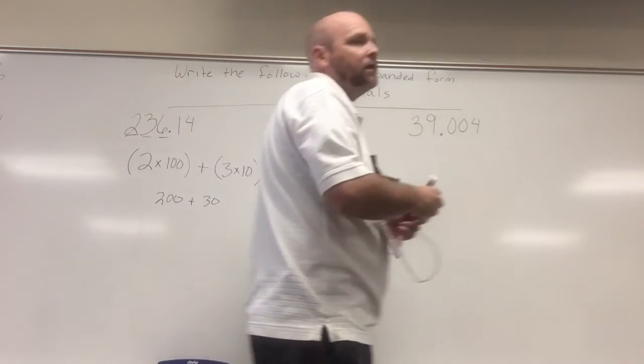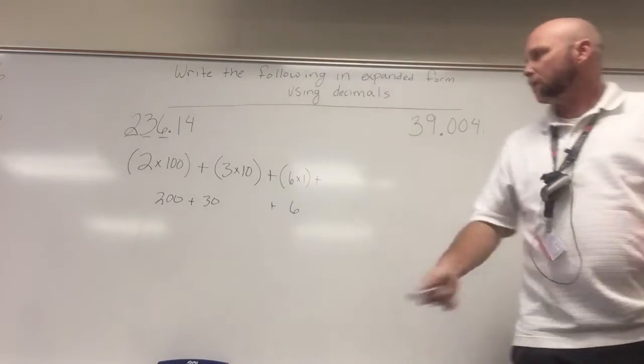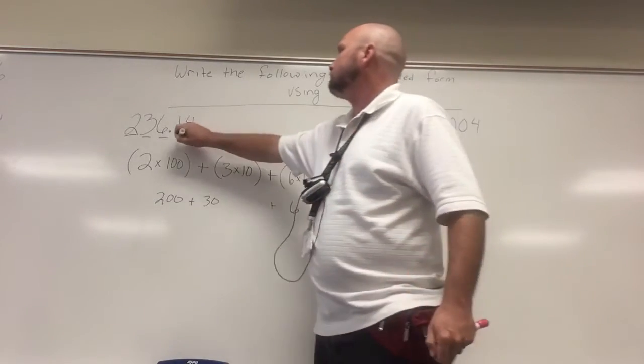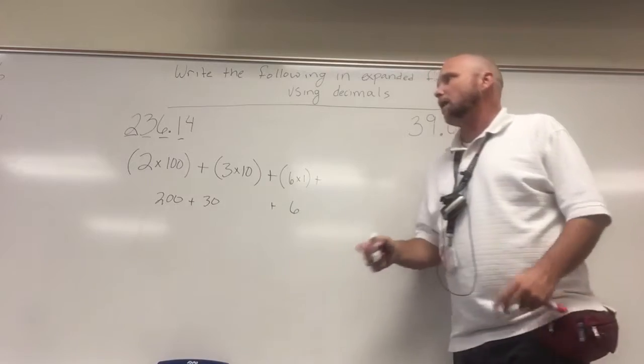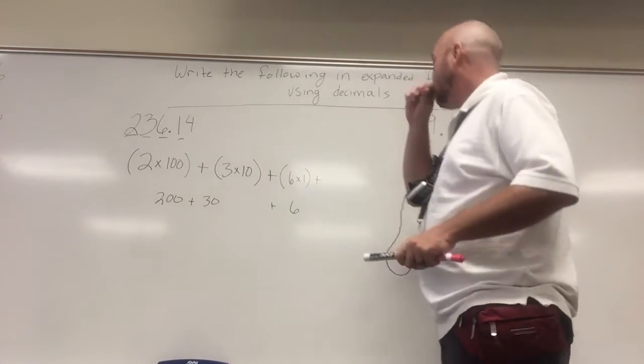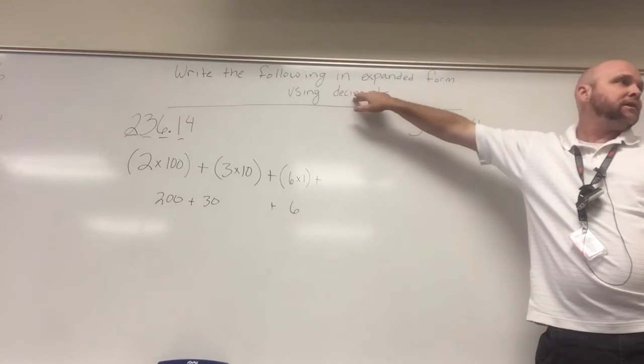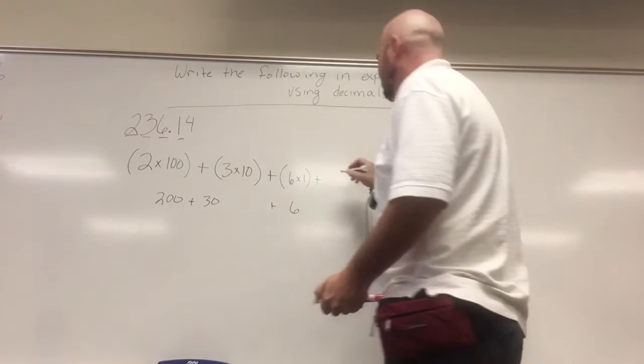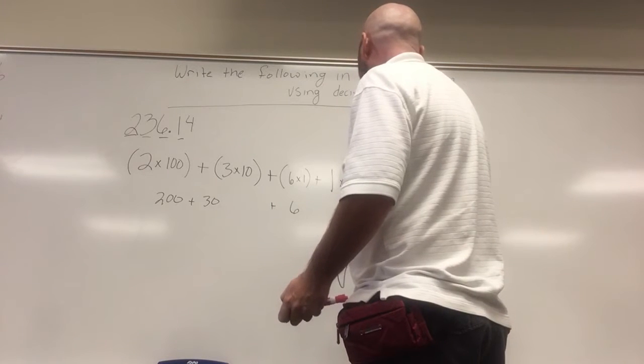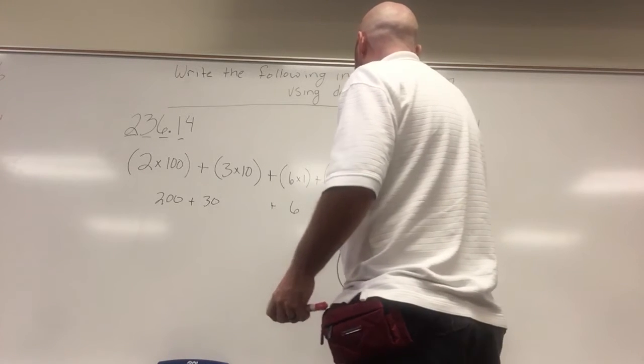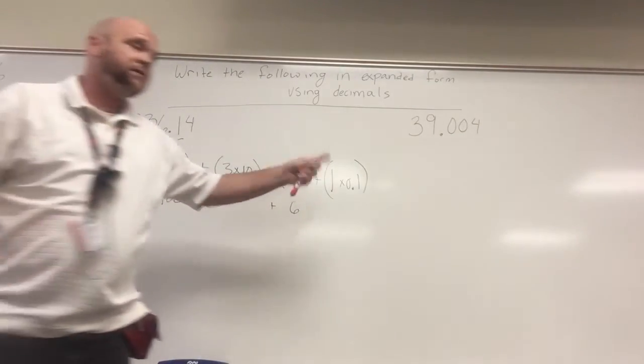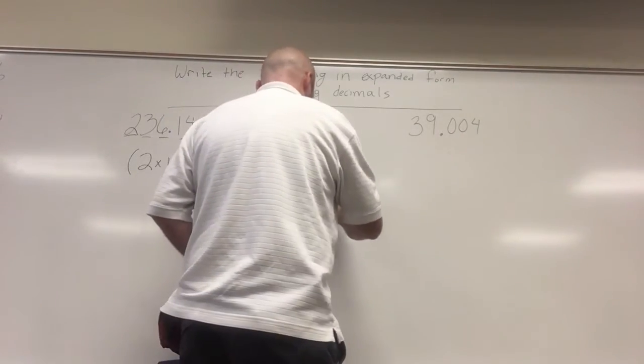So again, if I'm writing it in the way you were first shown, it's just going to be what it looks like below. Simone, now we're at the decimal point. So Simone, what place value is the one in? The tenths place. And since it says using decimals, we're going to take, we have one tenth times one. Okay, that's using decimals.